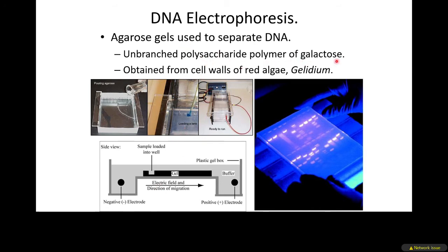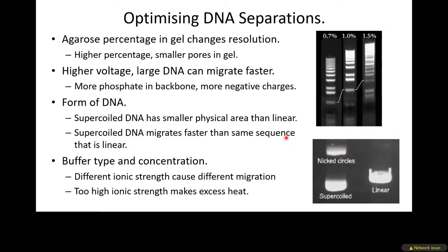Agarose is a polysaccharide polymer of galactose, normally obtained from red algae. You melt it, pour it into a tray with a comb, make wells for your sample, apply the electric field, and the DNA moves through the gel toward the positive electrode. After staining — typically with ethidium bromide — you can see bands of DNA separated by size. You can optimize the agarose concentration: higher percentage means smaller pores, better separation of smaller DNA fragments, while larger fragments don't separate as well.